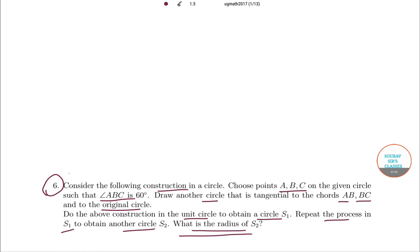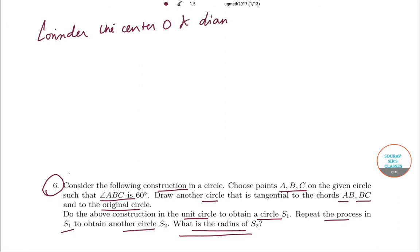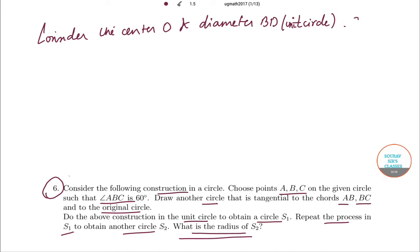Let's get started. I'll give you complete analysis of what needs to be done and based on that you will make the drawing. So let us consider the center O and diameter BD of the unit circle. Now it is easy to determine that S1 passes through D and its center E lies between O and D.